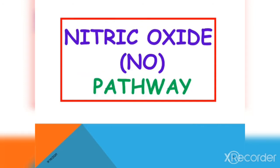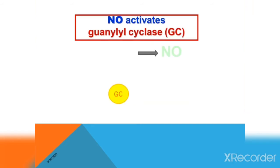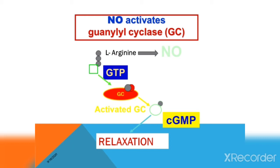Before going into the details of nitroglycerin, let's visit the nitric oxide pathway. Nitric oxide, or NO, is a readily diffusible gas. It is synthesized in the endothelial cells from the amino acid L-arginine, which we get from the diet, thanks to the enzyme nitric oxide synthase, which itself is activated by Gq proteins or Gq-coupled receptors. Nitric oxide diffuses from the endothelial cells to the smooth muscle cells of the large veins, where it activates guanylyl cyclase enzyme, which increases the levels of cyclic GMP and causes relaxation of the smooth muscles, ultimately causing vasodilation.